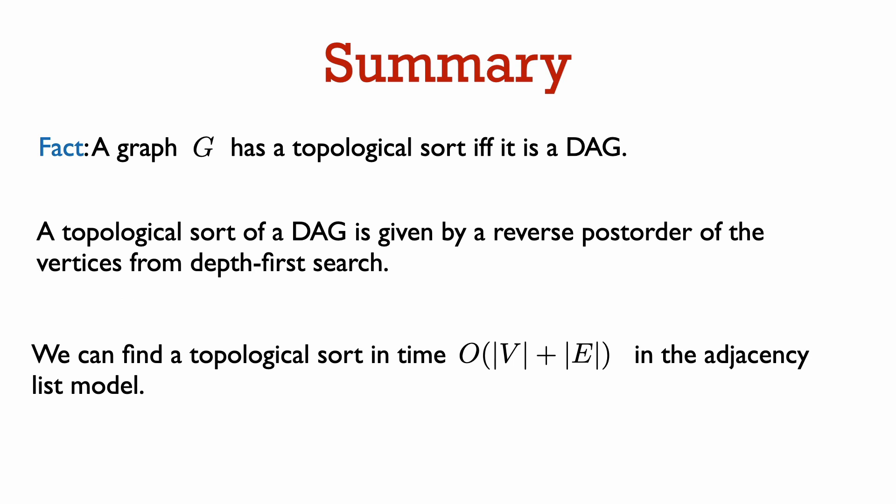To summarize: we have given an algorithm to find a topological sort in any DAG. A graph with a cycle cannot have a topological sort, so this shows that a graph has a topological sort if and only if it is a DAG. Topological sort can be found by depth-first search — namely by running DFS, keeping track of the finishing times of DFS visit, and outputting the vertices in reverse postorder. Since the running time of depth-first search is O(V + E) in the adjacency list model, we can find a topological sort in a DAG in this same amount of time.